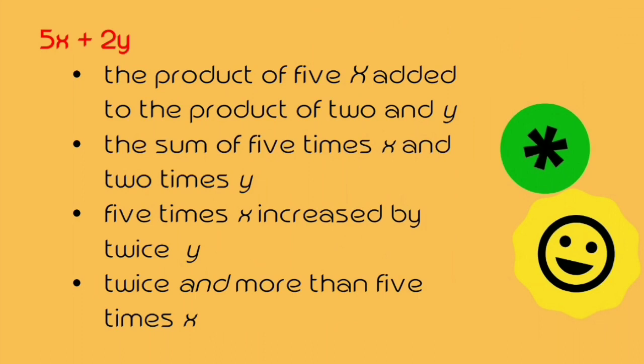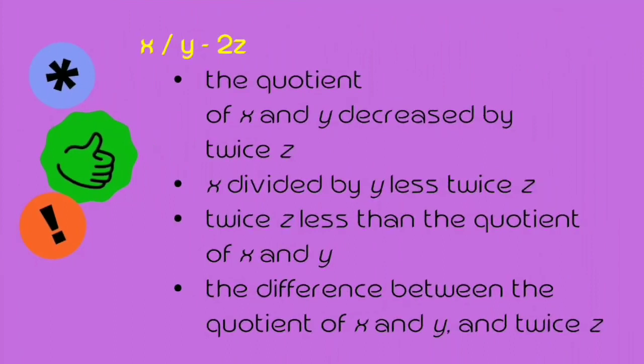5x plus 2y can also be 5 times x increased by twice y, or twice y more than 5 times x. x over y minus 2z: the quotient of x and y decreased by twice z, or x divided by y less twice z. It can also be twice z less than the quotient of x and y.